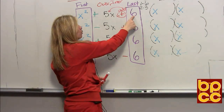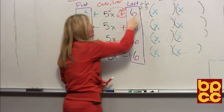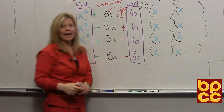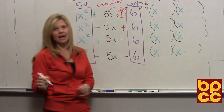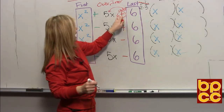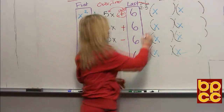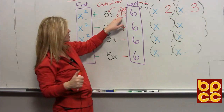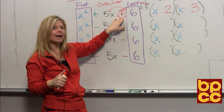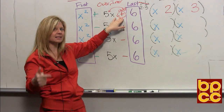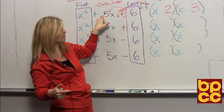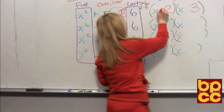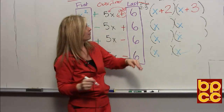Helpful hint: you want to multiply to the last number — write your options — then read it to yourself: I want to add to 5. Will 1 and 6 add to 5? No — 1 and 6 add to 7. Will 2 and 3 add to 5? Yes. Now all you've got to do is get the signs. Add means the terms have to be alike, the same. So if you want to add to a positive 5, they both have to be positive.